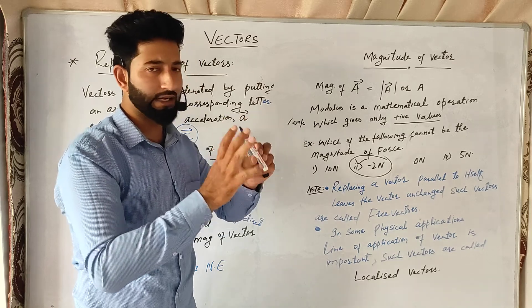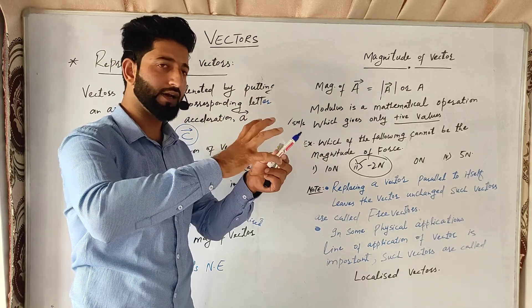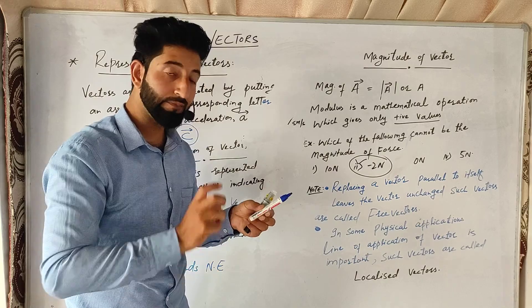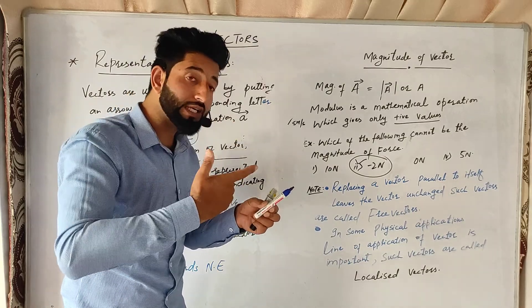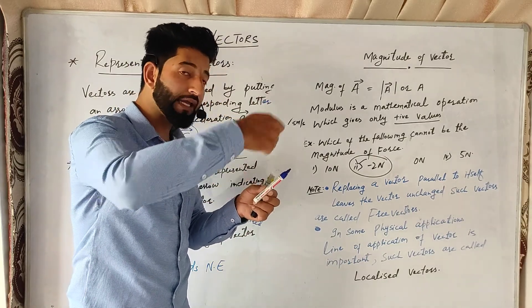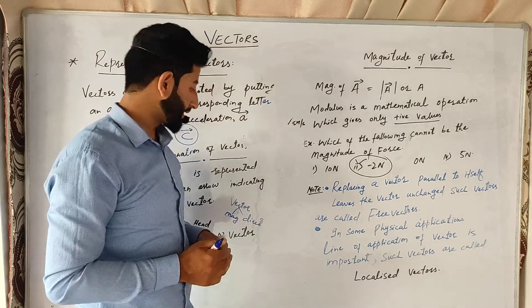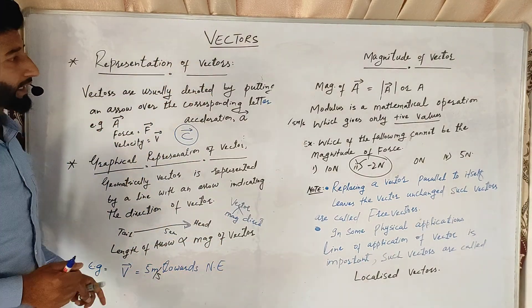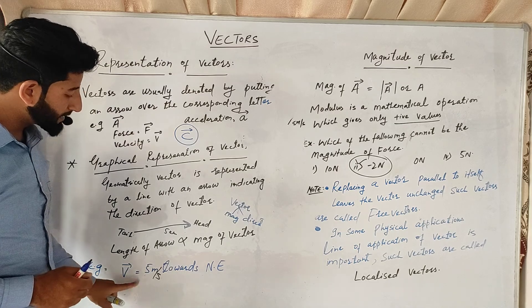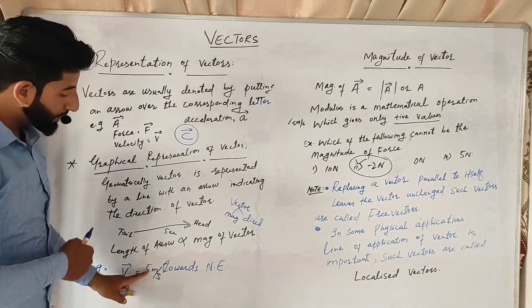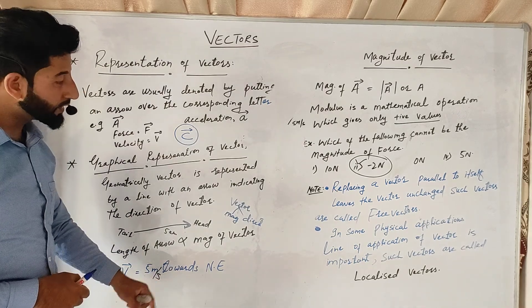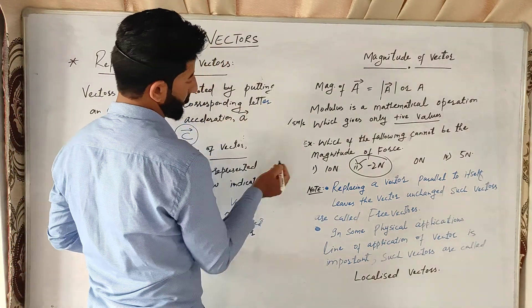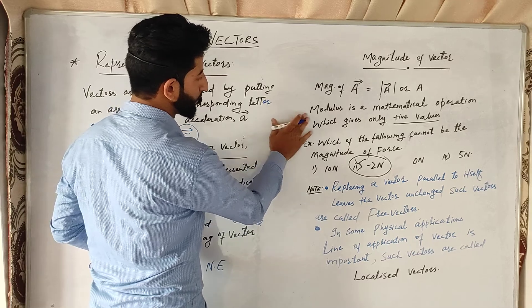Isi tarah east mein dikhana ho, west mein dikhana ho, jis direction mein dikhana ho, us direction ka arrow usi direction mein dalengy. Aur jitna uska magnitude hoga, us magnitude ki line ko hum draw karenge. For example, hame ek velocity ko represent karna hai: 5 meter per second towards north east.